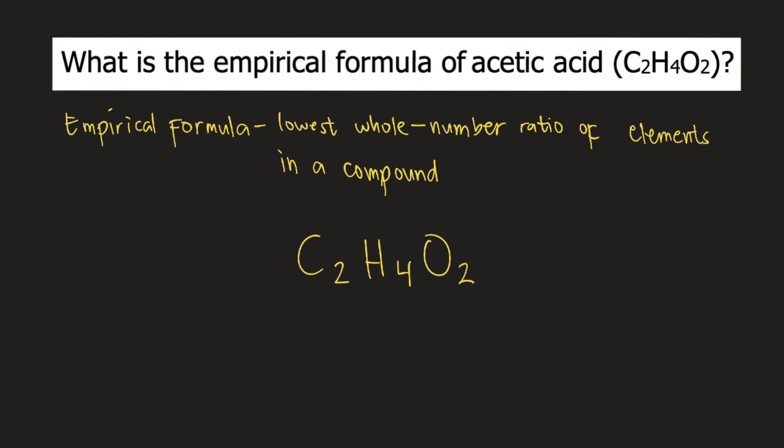To get the empirical formula, what you need to do is to divide all the subscripts by their GCF, or the Greatest Common Factor.